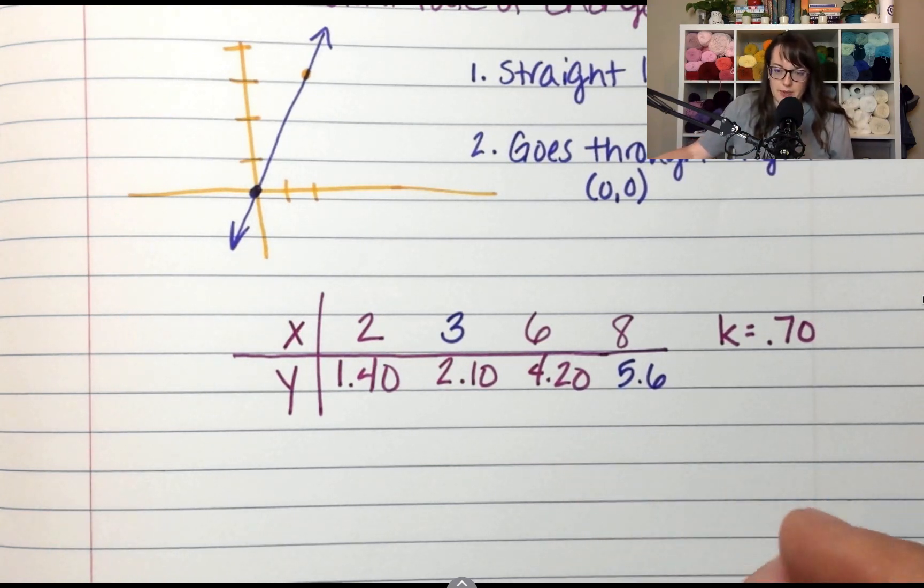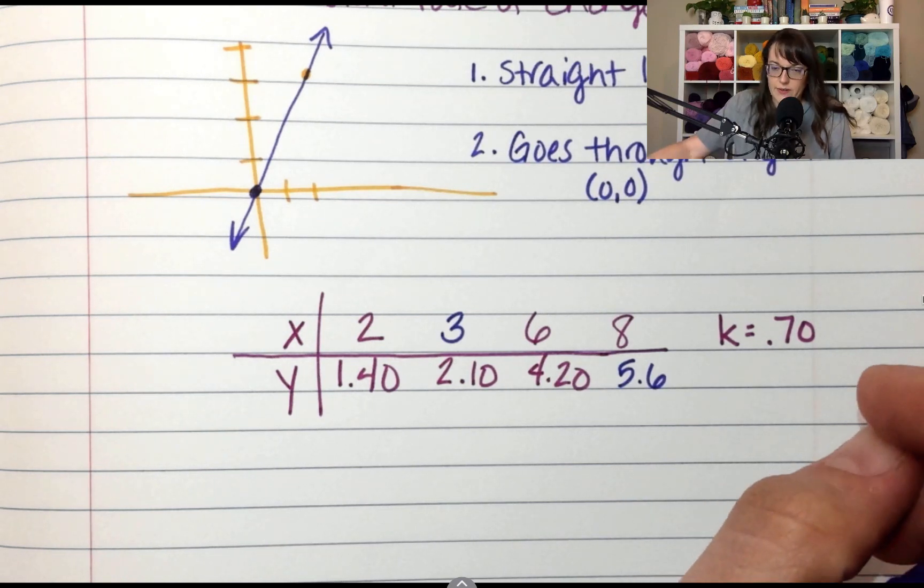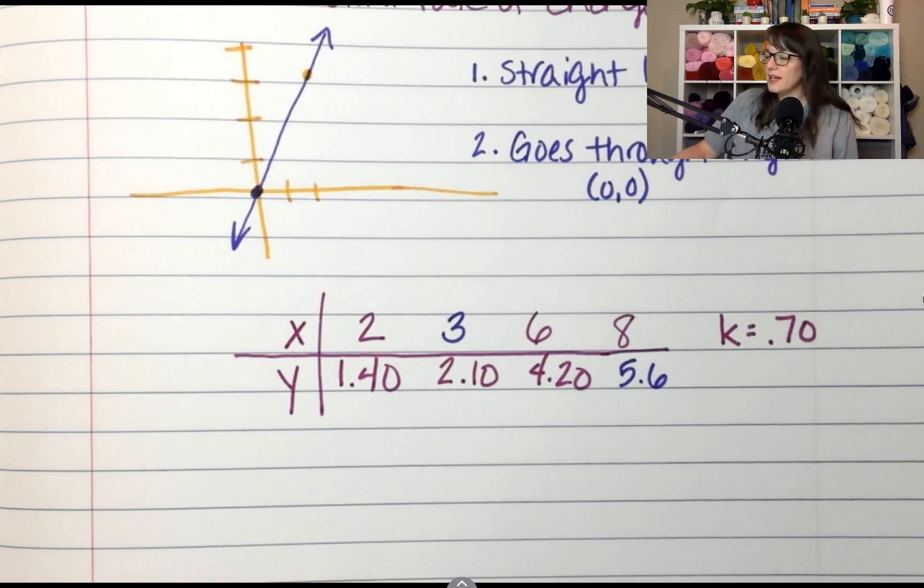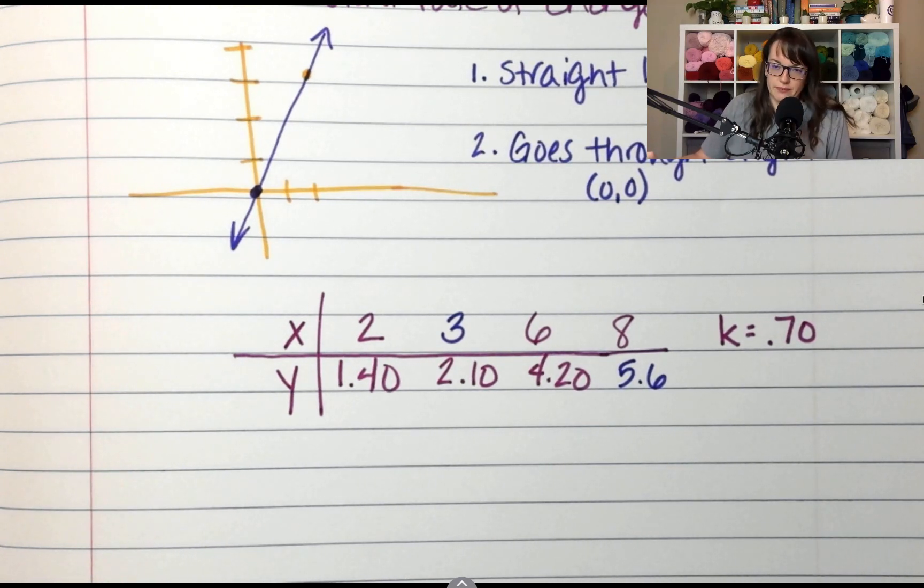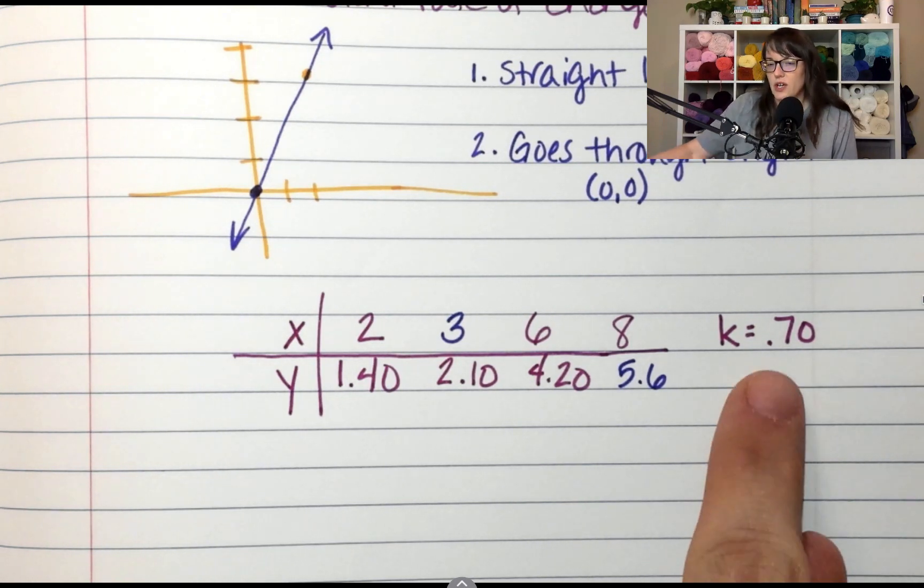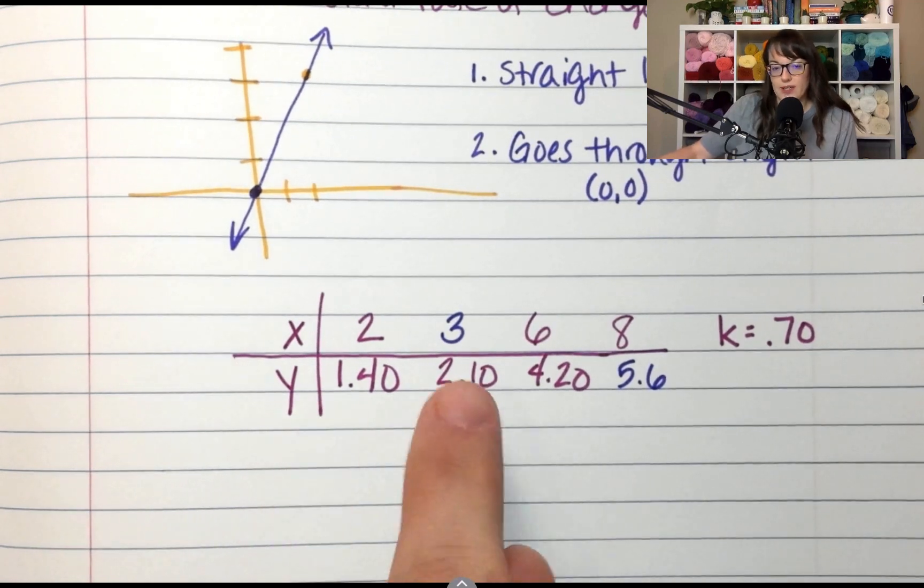I do not expect you to be able to do that in your head. I already knew the answers. You should be writing this down. Last question. Is this a proportional relationship? Absolutely it is because it has a constant rate of change of 0.7 and it works every single time.